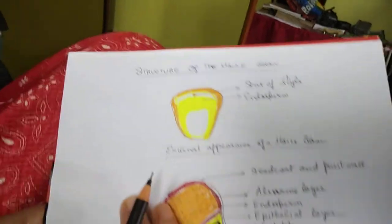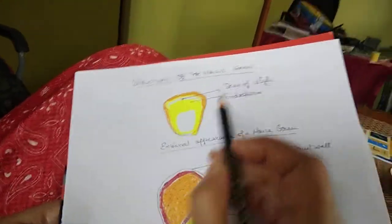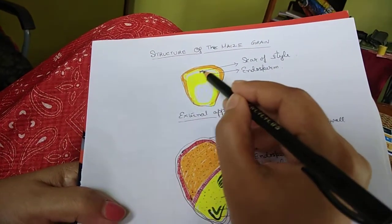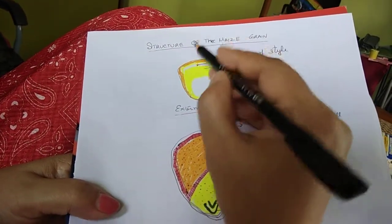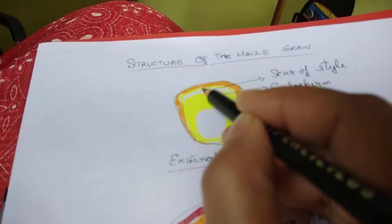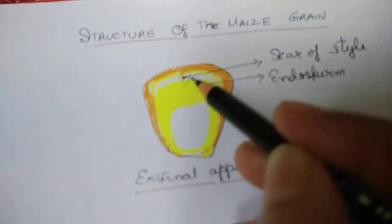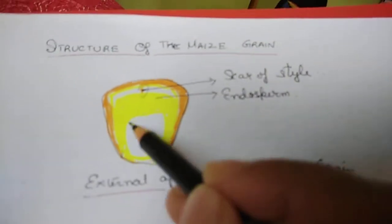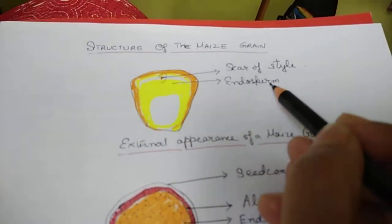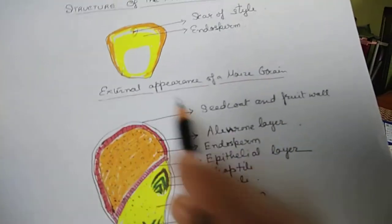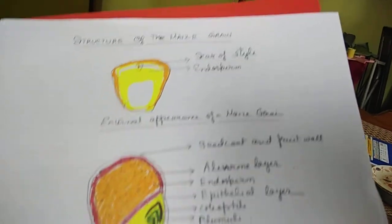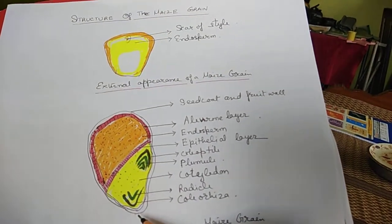Now we look at the structure of a monocotyledonous seed — the maize grain. The maize seed has a white scar portion where the style was attached, and the yellow colored portion is the endosperm. This is the external appearance. We will now make a longitudinal section of the maize grain.